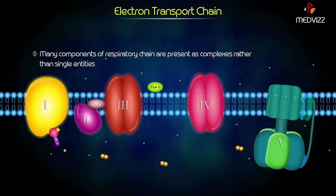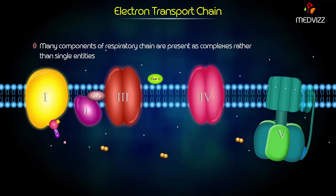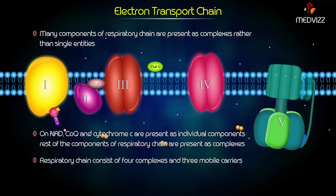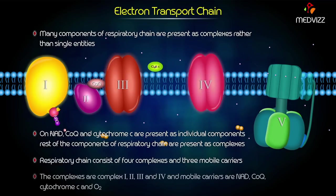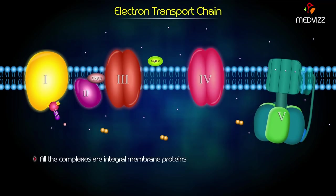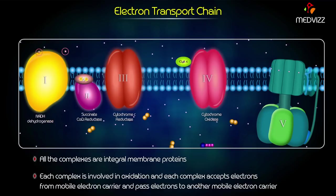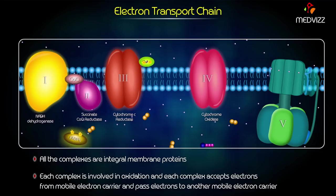Many components of the respiratory chain are present as complexes rather than single entities. NAD, coenzyme Q, and cytochrome C are present as individual components, whereas the rest are present as complexes. The respiratory chain consists of four complexes and three mobile carriers. The complexes are Complex 1, 2, 3, and 4, and the mobile carriers are NAD, coenzyme Q, cytochrome C, and oxygen. All the complexes are integral membrane proteins, each involved in oxidation, accepting electrons from mobile electron carriers and passing them to another mobile electron carrier.